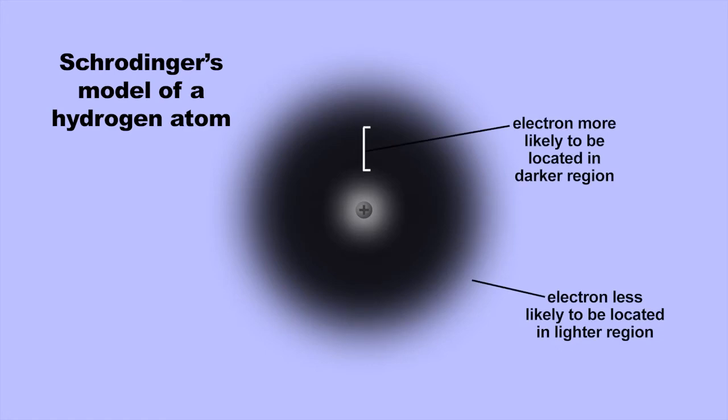However, this entails giving up the idea that electrons orbit the nucleus like miniature planets orbiting a tiny sun. Instead, an orbital can be visualized as a cloud of negative charge surrounding the nucleus. The denser parts of the cloud represent regions where an electron occupying the orbital would spend most of its time.